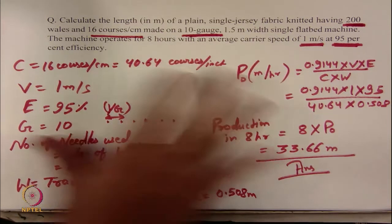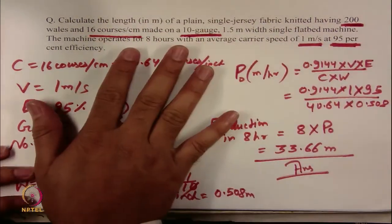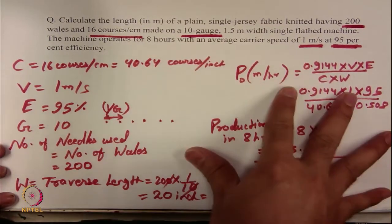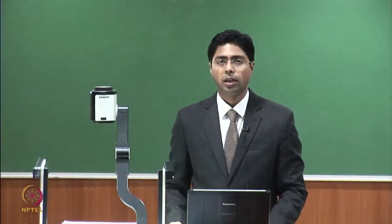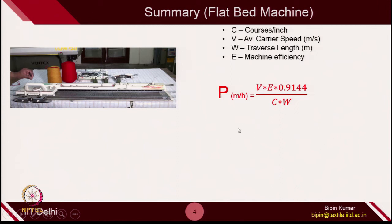With this, we are ending this lecture. This is the formula you may want to remember — or if you understood the concept, you don't even need to memorize it. In the next class, we will start calculations related to fabric structure: GSM, course width, fabric length, shrinkage, and tightness factor — all related to fabrics will be covered in the next lecture. Thank you very much for listening.